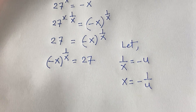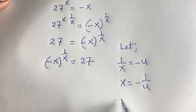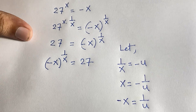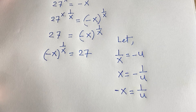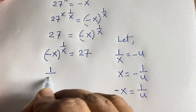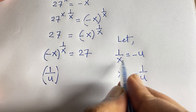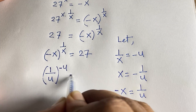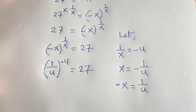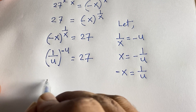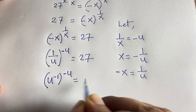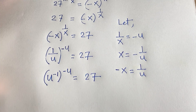Substituting into the equation: -x = 1/u and 1/x = -u, so we get (1/u)^(-u) = 27. I can rewrite 1/u as u^(-1), so the equation becomes (u^(-1))^(-u) = 27.